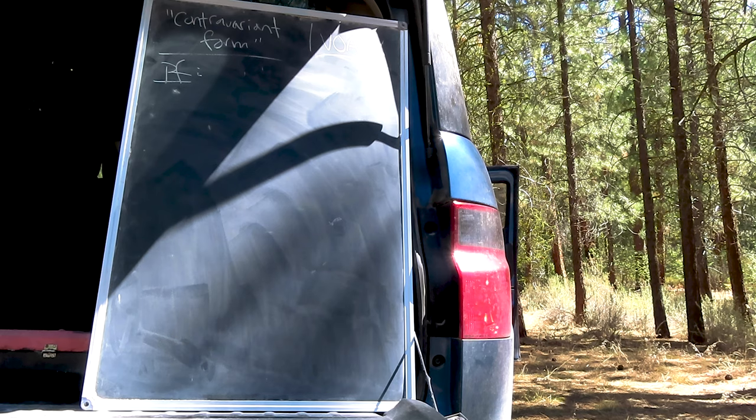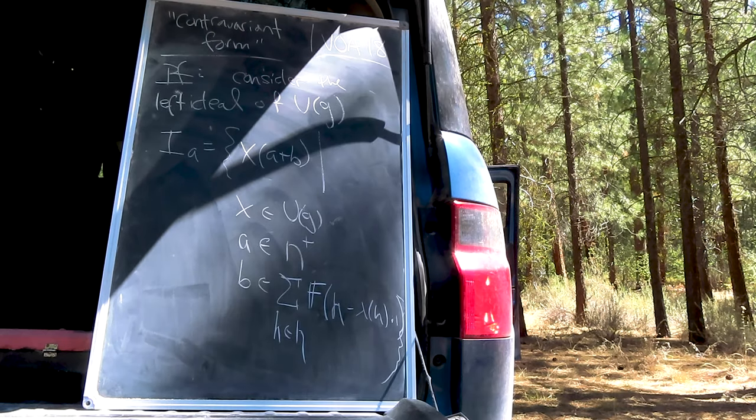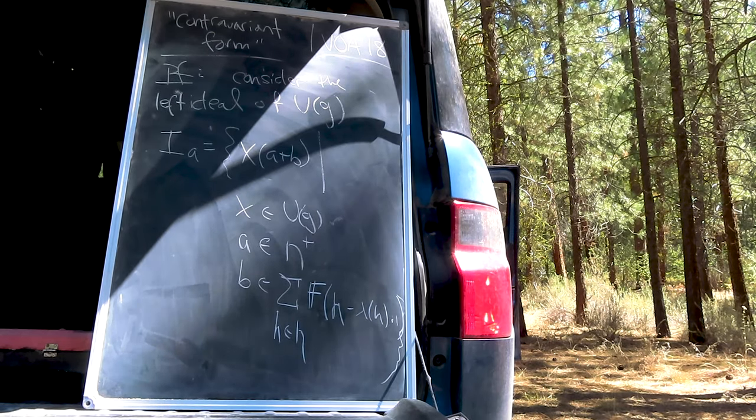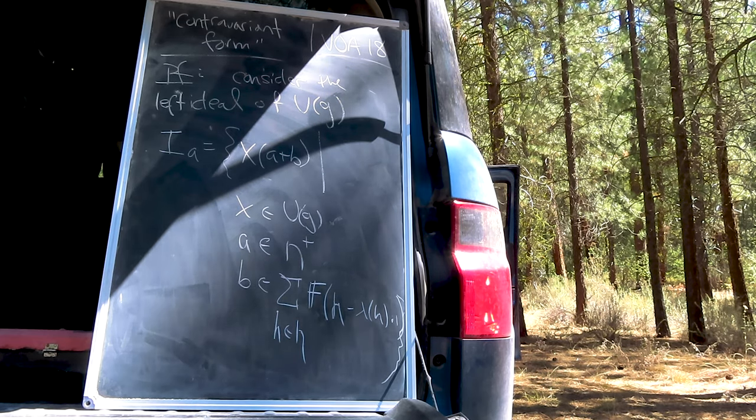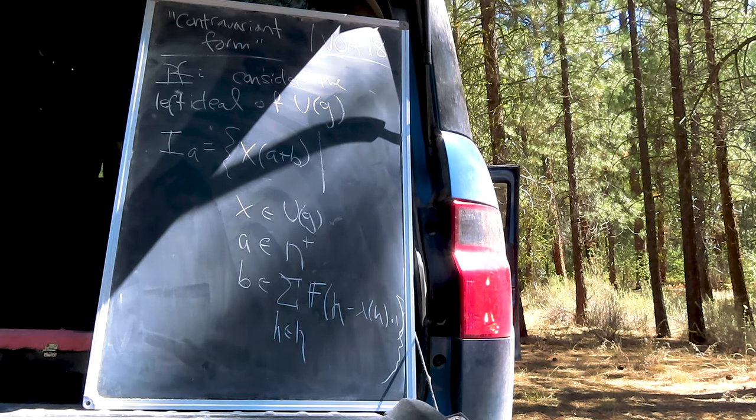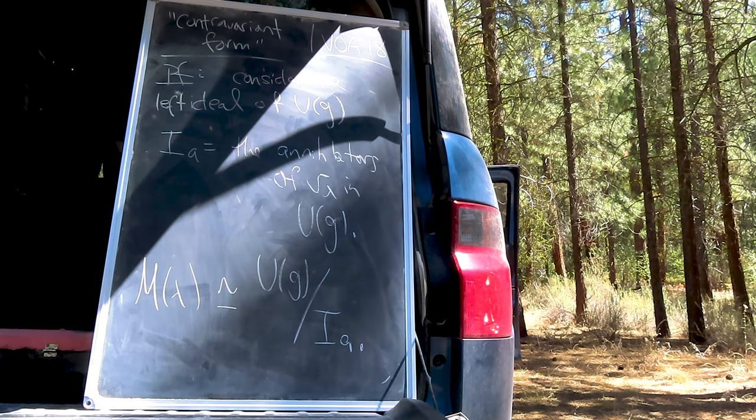We now prove the claim. First, consider a left ideal of U of G, namely those elements which annihilate the basis vector V Lambda. It should be clear then that the module M of Lambda is isomorphic to the quotient of U of G by this ideal.